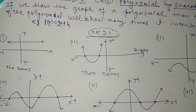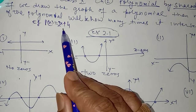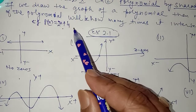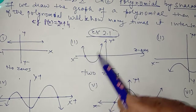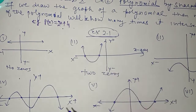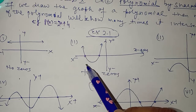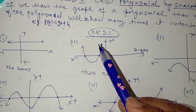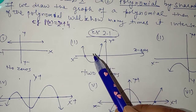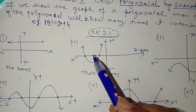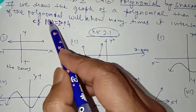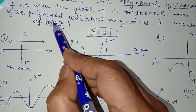The number of zeros of the polynomial: it is a linear polynomial so it will have only one zero. If it is any quadratic polynomial then it will have two zeros. The graph of any quadratic polynomial is a parabolic graph. So how many zeros will the quadratic polynomial have?